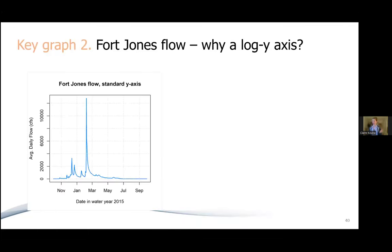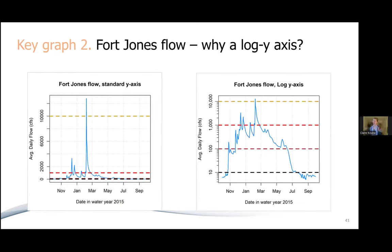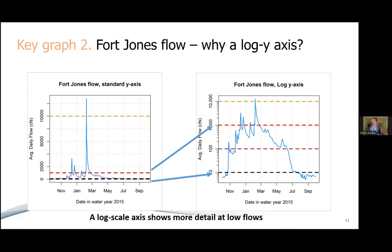Why do we use a log y-axis? This is the Fort Jones flow hydrograph for water year 2015 with a standard y-axis — it goes up to maybe 12,000 cubic feet per second. With a log y-axis, if you put lines at 10, 100, 1,000, and 10,000 CFS, they're all clustered together in the standard y-axis but really spread out with the log y-axis. It gives you more detail at low flows. The difference between 1,000 and 1,010 CFS doesn't have much significance for managers, but the difference between 10 and 20 CFS is greatly significant. So this choice of a log y-axis reflects that.